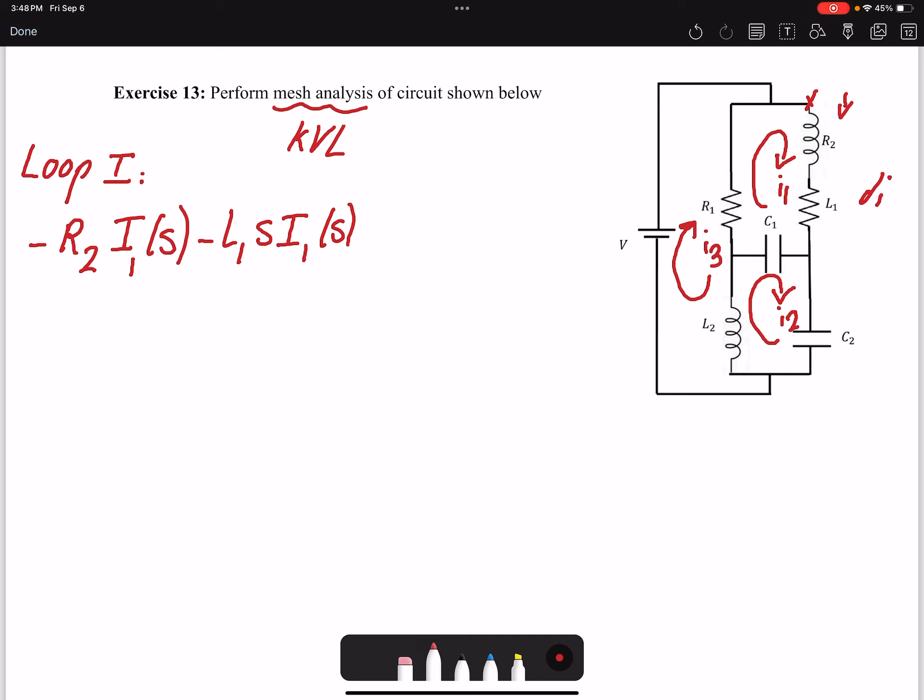When we get to our C1 here, you have two currents: you have I1 and I2. So if I draw it here, I would have I1 going in this direction, and I2 would be in that direction.